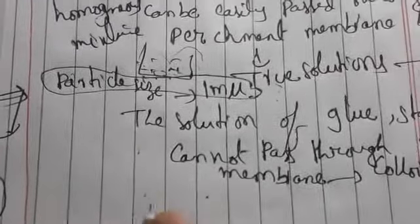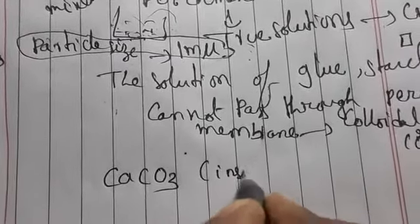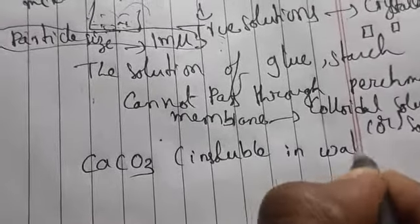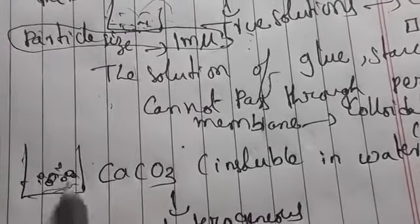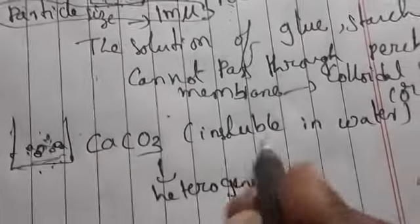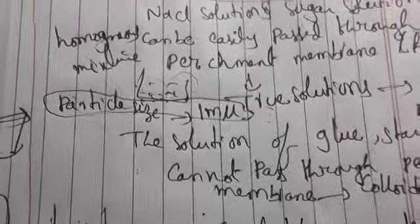Now let us see suspension solutions before going to colloidal solutions. Here we take an insoluble substance like calcium carbonate, CaCO3, which is insoluble in water. Even if you shake vigorously, it does not dissolve. This is a heterogeneous compound because it does not form a clear liquid — it forms two layers. Since there are two distinct components — solute and solvent — it is a different mixture, which can be seen with our naked eye.